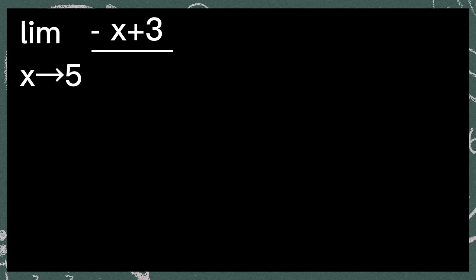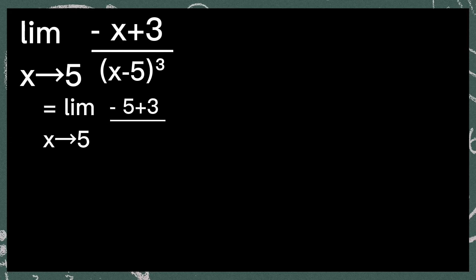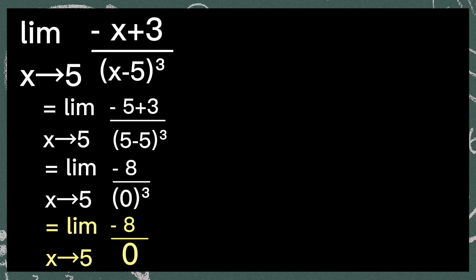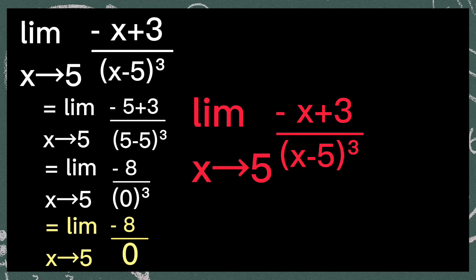Next, the limit of negative x plus 3, all over x minus 5 cubed, as x approaches 5. First, substitute the value of x which is 5. It will be the limit of negative 5 plus 3, all over 5 minus 5 cubed, as x approaches 5. So negative 5 plus 3 is negative 8, and 5 minus 5 is equal to 0, and 0 cubed is equal to 0. As you can see, our denominator is equal to 0. So the limit of negative x plus 3 over x minus 5 cubed, as x approaches 5, does not exist.